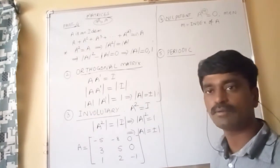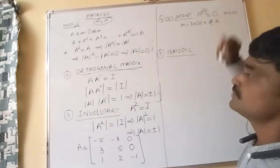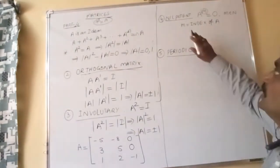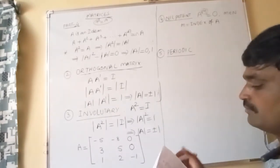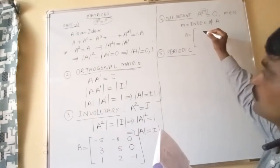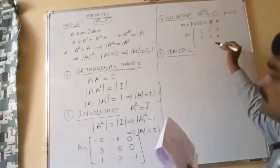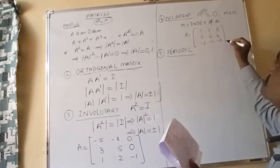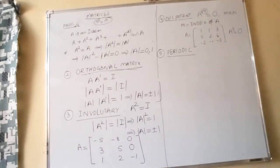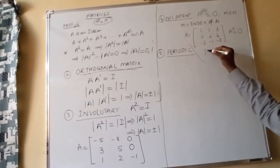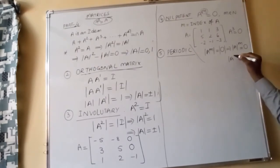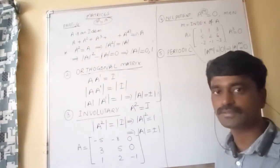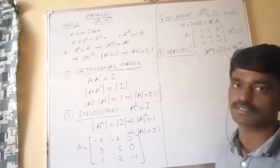Example for nilpotent matrix: the 3×3 matrix with first row 1, 1, 3; second row 5, 2, 6; third row −2, −1, −3. If you calculate A³ = null matrix, the index is 3. Since det(A)^M = det(0) = 0, we get det(A) = 0, meaning a nilpotent matrix is always singular and not invertible.